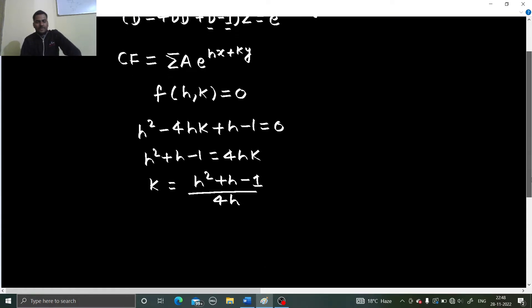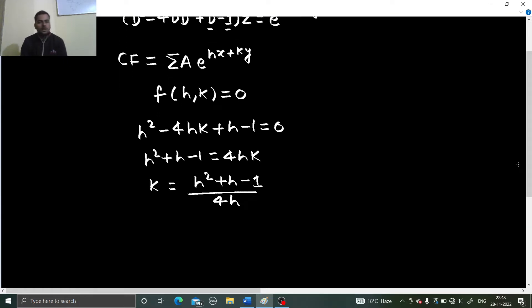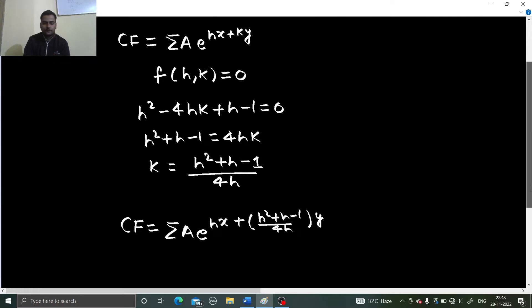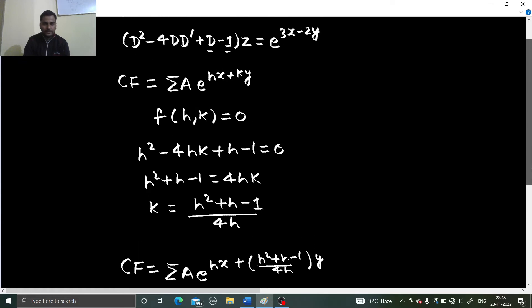This cannot be even simpler. So just replace that k by this so that it is entirely in form of either h or k, in this case in terms of h. So a e power hx plus in place of k put h square plus h minus 1 divided by 4h y. There you go. You have successfully found your complementary function coming to the pi.